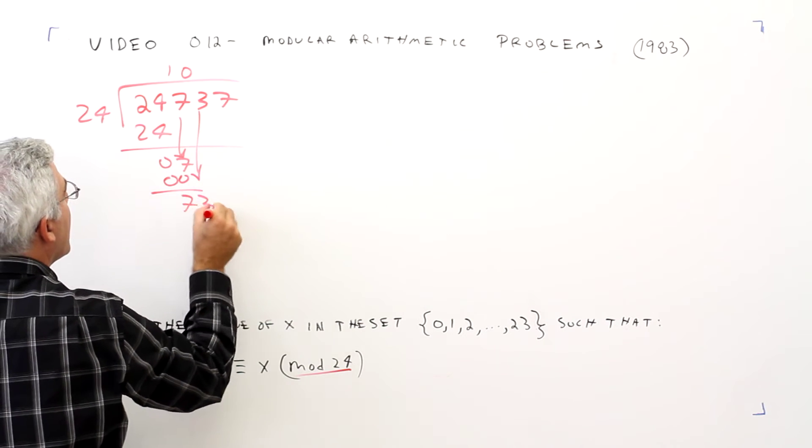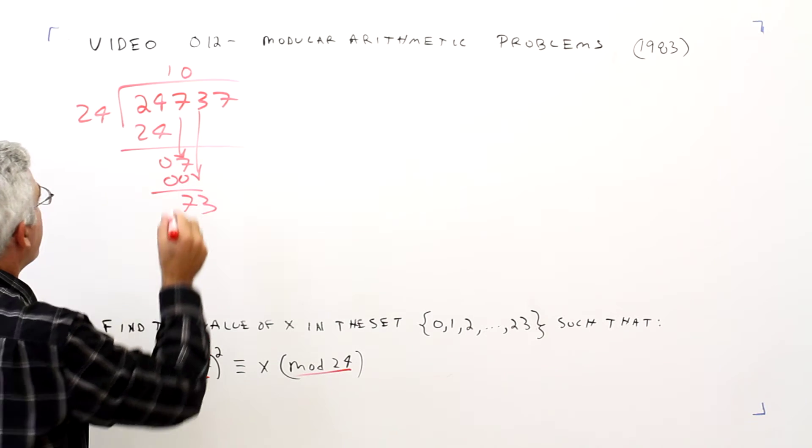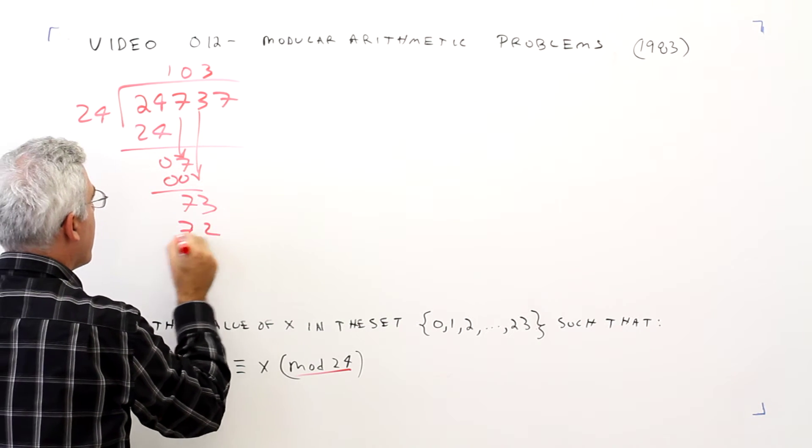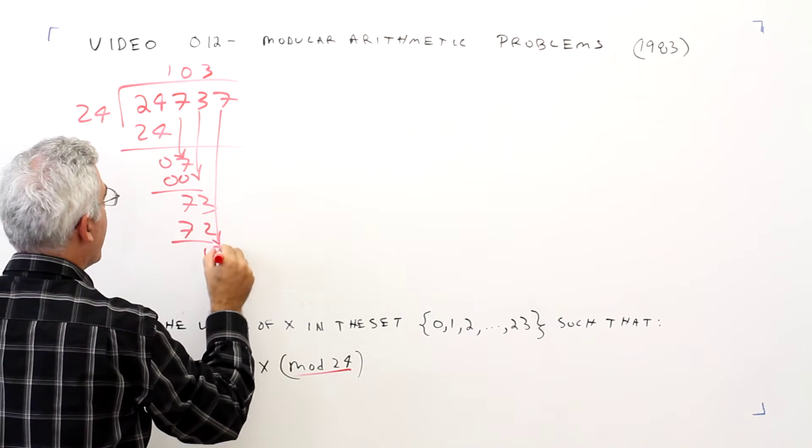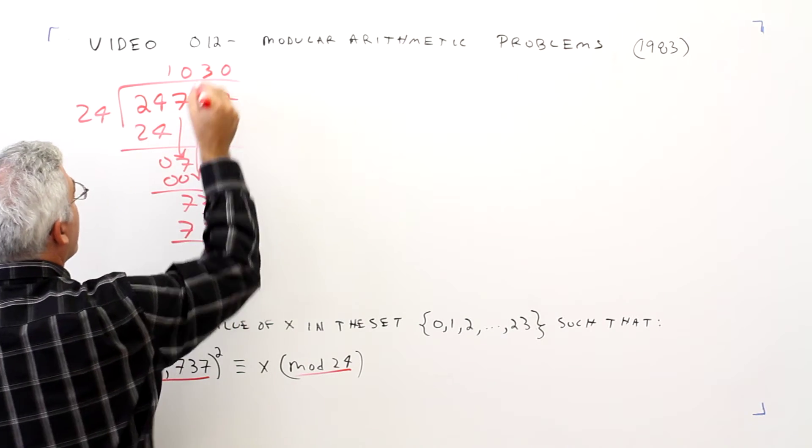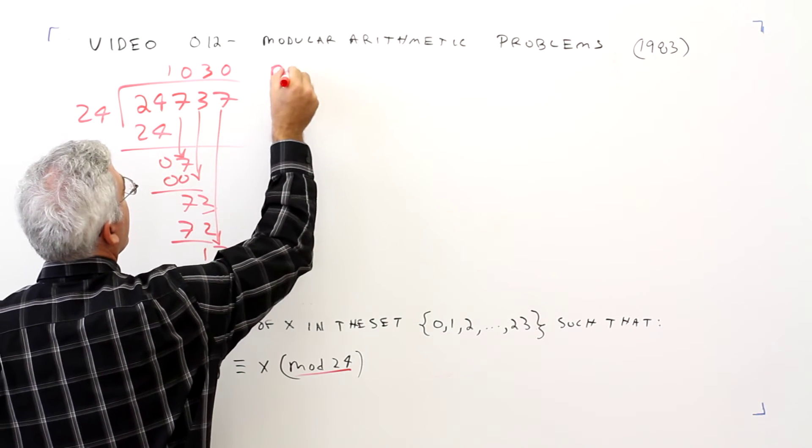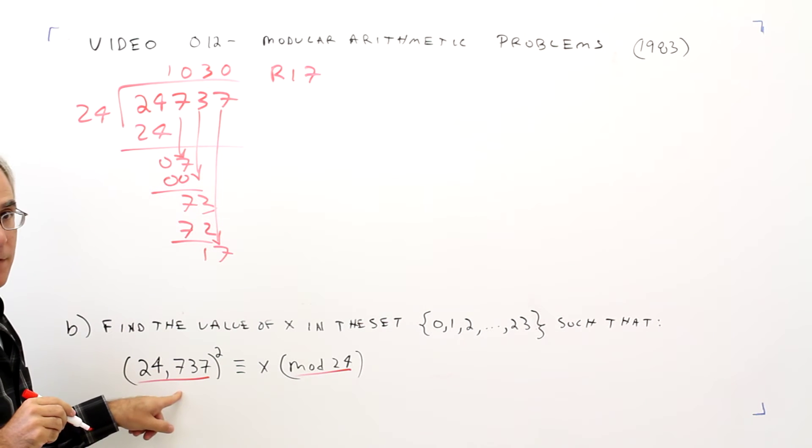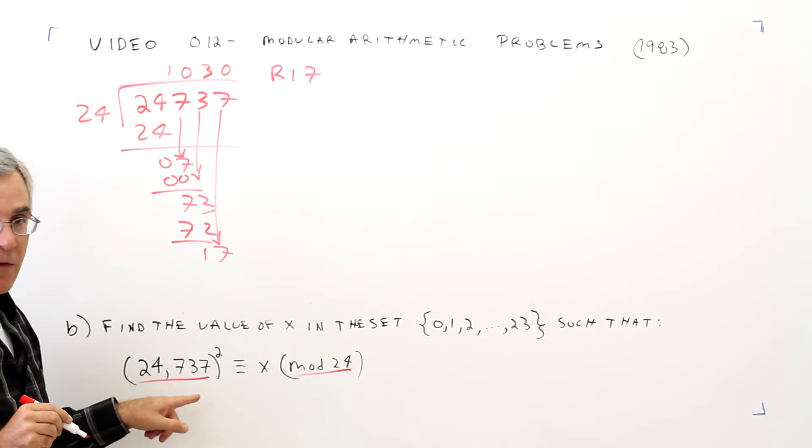What do we have there? 3, 3, 72, 1, bring down the 7, 0, remainder 17. All right, so this is just congruent to 17 in mod 24. So let's rewrite that problem. I'll erase this.